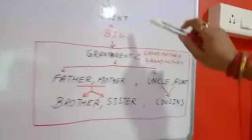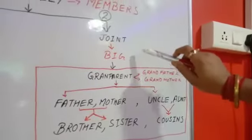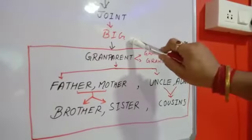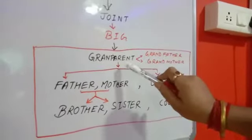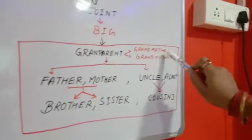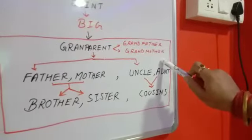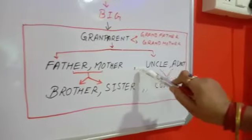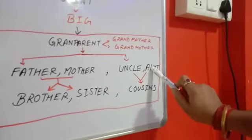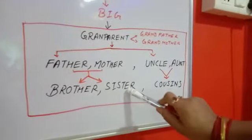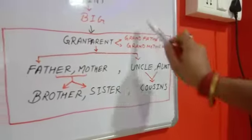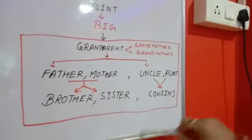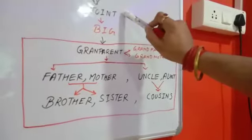Now let's move on to joint family, which is a big family. Joint family is a big family where you are living with your grandparents — that is grandfather and grandmother — along with your father, mother, uncle, aunt, brother, sister and cousins. When you are all living together in a big family, it is known as joint family.